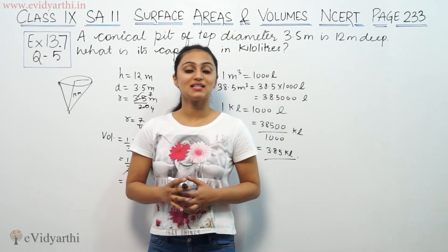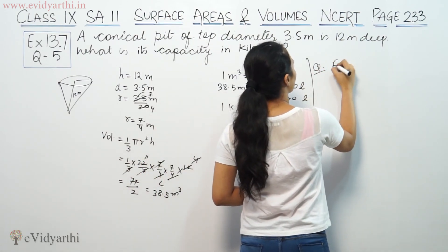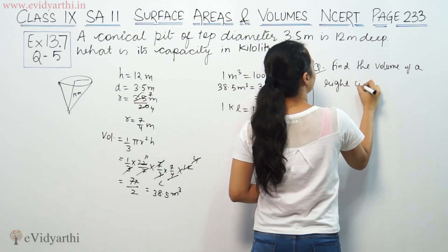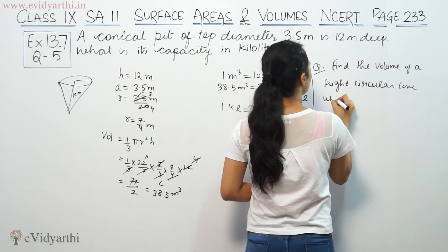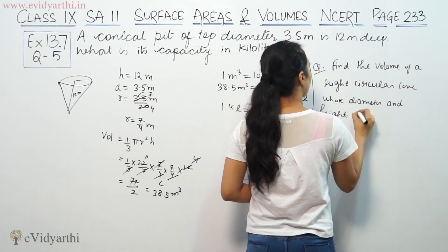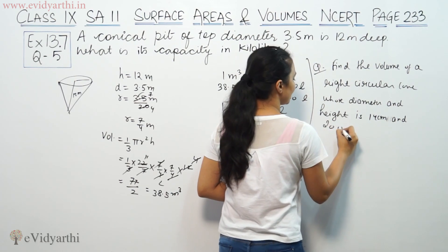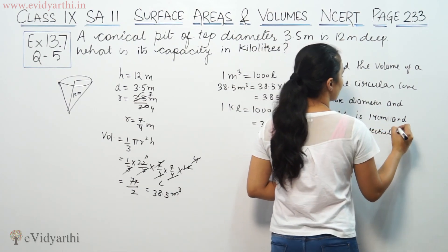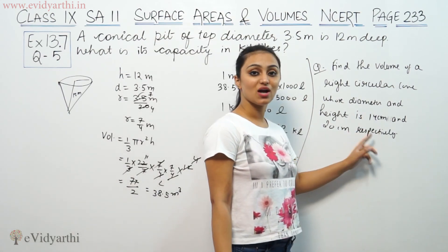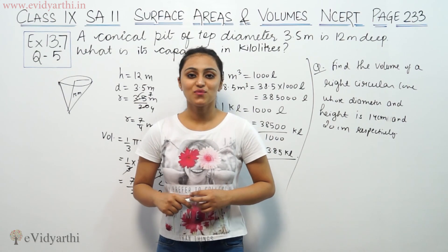This was question number 5 from exercise 13.7. Now it's your turn to solve a question: find the volume of a right circular cone whose diameter and height are 14 cm and 20 cm respectively. Let's see how many of you get the correct answer. Do watch the next video for some more questions. Goodbye.